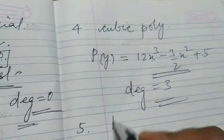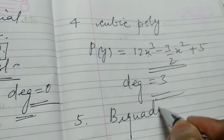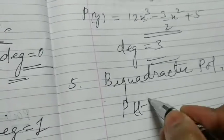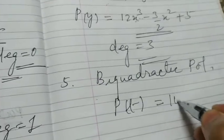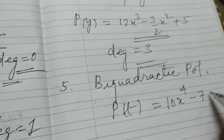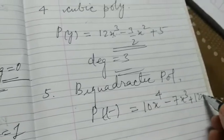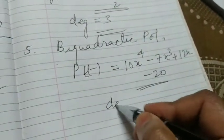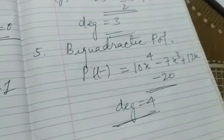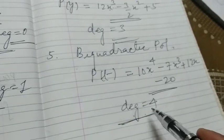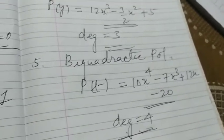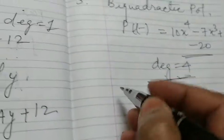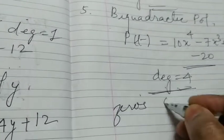The fifth type is the bi-quadratic polynomial. For example, 10x⁴ − 7x³ + 12x − 20. This polynomial has the highest degree equal to 4. When the degree — or index — of any polynomial is equal to 4, it is known as a bi-quadratic polynomial.